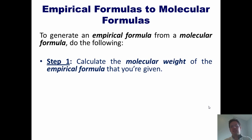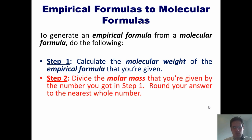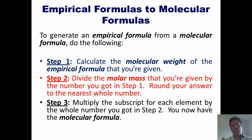Step one. Calculate the molecular weight of the empirical formula that we're given. And we're always given one in a problem. Step two. Divide the molar mass that we're given, also comes in our problem, by the number we got in step one. And round that to the nearest whole number. Step three. Multiply the subscript of each element in our empirical formula by the whole number we got in step two. That is now the molecular formula.